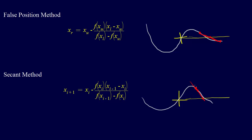With the false position method, you don't have the same divergence problems as with the secant method. The secant method is very similar to Newton-Raphson: Newton-Raphson uses the actual derivative, while the secant method approximates the derivative by perturbing it by delta x. The false position method has that dependable bracketing characteristic — it may converge slowly under certain conditions, but it's reliable — whereas the secant method is definitely an open method.